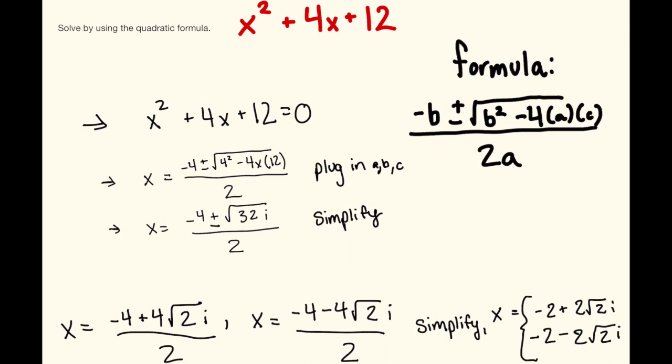We can then separate our x values into the positive and negative square roots. After that we can simplify by dividing by 2 to find our final x values.